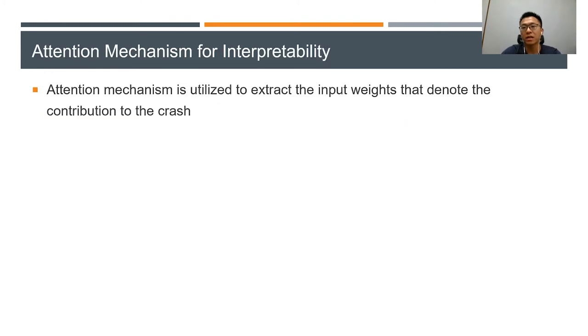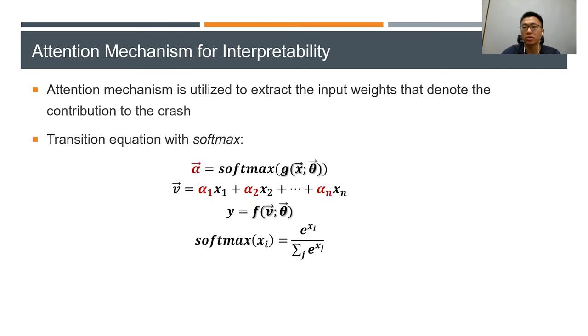For the explanation method, we use the attention mechanism. It avoids the saturation problem. The idea of attention mechanism is about weight assignment on input nodes, and it is used to extract the input weights that denote the contribution to the crash. Here is the transition equation with softmax function.